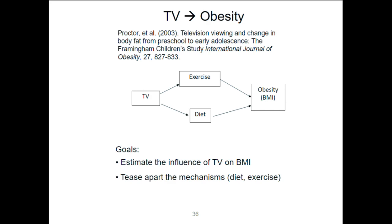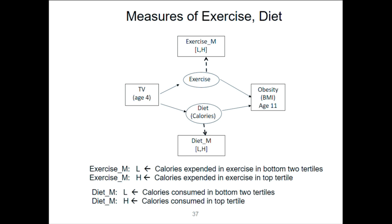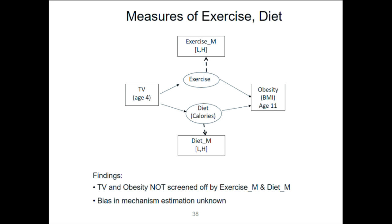Here's a real study from 2003 whose goal was to estimate these mechanisms. What they did was astonishing: they measured exercise on a continuous scale (minutes per week) and diet on a calorie scale, but instead of using those, they coarsened both. For exercise they turned it into tertiles — low, medium, high — then collapsed the two high ones into one binary, which is pretty much the worst thing you can do. They did the same for diet. Unsurprisingly, TV and obesity were not screened off even when controlling for both exercise and diet after coarsening. So they negated their own theory.